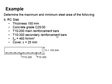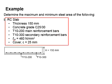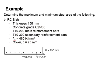Next, we deal with the slab. The slab thickness is 150. The concrete grade is 25. The main reinforcement bar is T10-200 and the secondary reinforcement bar is T10-300. The specified yield strength of the reinforcement bar is 460, and the cover is 25. You may pause the video to work out the solution.